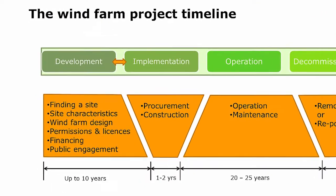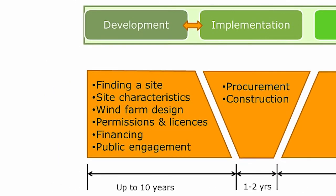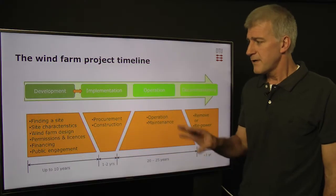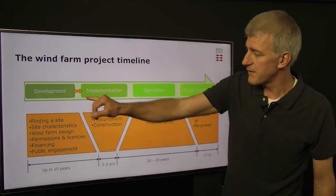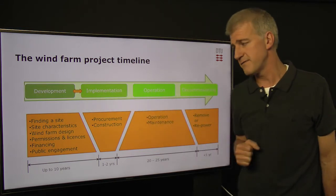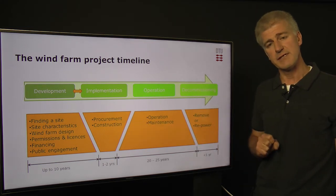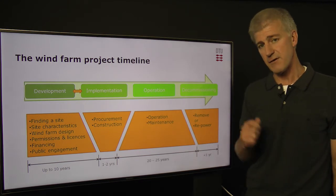The development phase is really all about finding the site and finding the right site. You need to take a close look at the characteristics of the site to make sure that it is suitable for your project, not least, of course, the wind resource. You'll need to be doing a little bit of the wind farm design, and this is a bit of an iterative process until you get to the final design. Permissions and licenses, you will very much need to obtain the correct permits and licenses, and this can take quite some time.